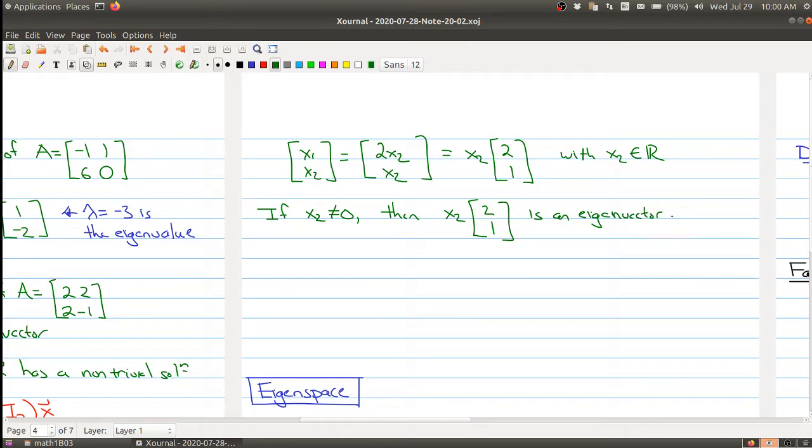So in particular the [2; 1], i.e. take x₂ equal to 1, is an eigenvector of lambda equals to 3.